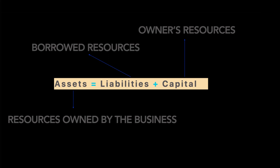The accounting equation summarizes the entire course — assets, which are resources owned by the business, are financed by the owner's capital and borrowed resources called liabilities. This helps us understand the position of a firm at a particular time: what assets the business owns, how much is financed by the owner, and how much by borrowed capital. This equation should always balance at any point in time. In the next video, I'll discuss the types of assets, liabilities, the role of capital, and we'll look at some exercises.